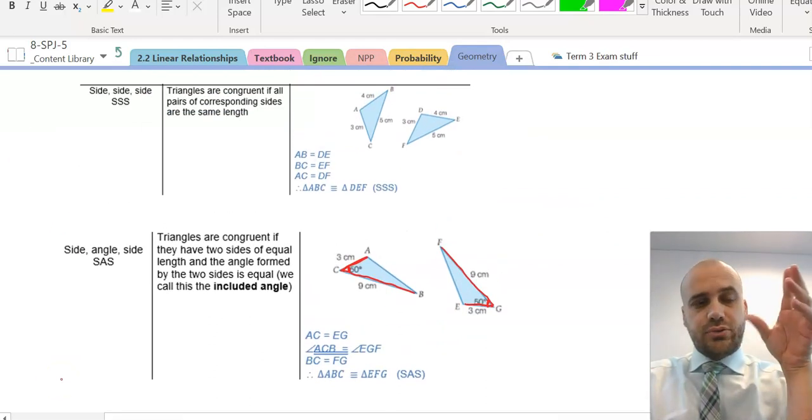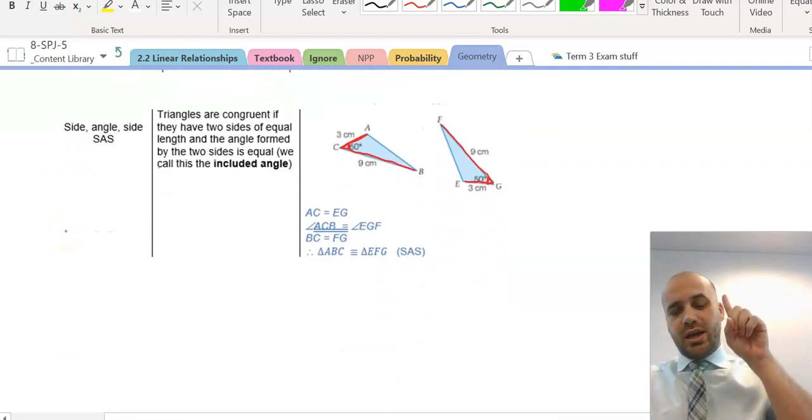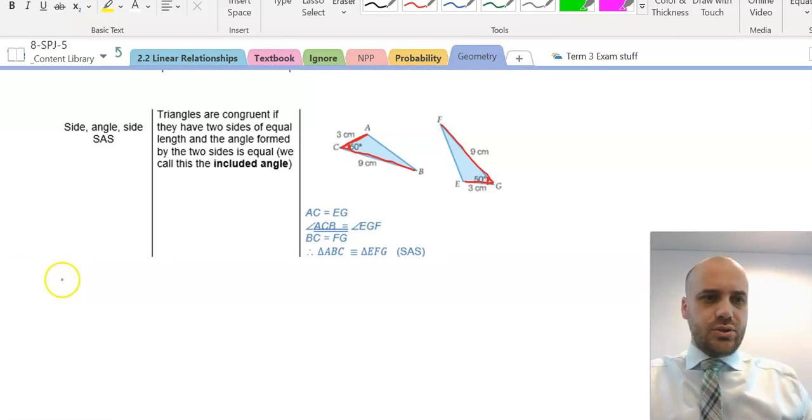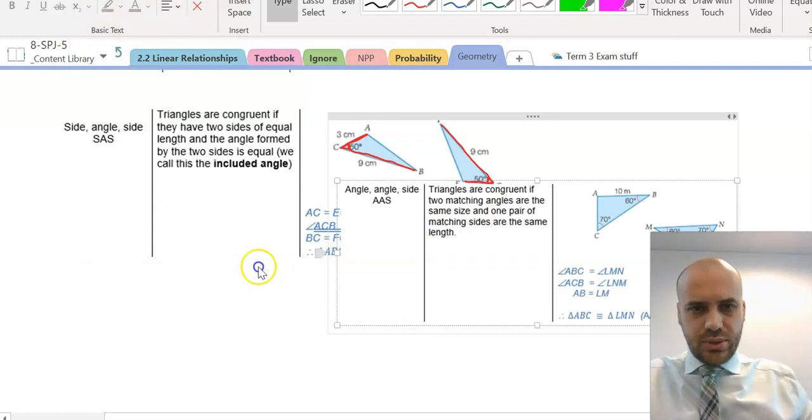Now, so far, we had three sides here. We had two sides and one angle here. This time, we're only going to have one side. But with one side, we're going to need to know two angles. So, it's called the AAS rule. Let's get on on this one.